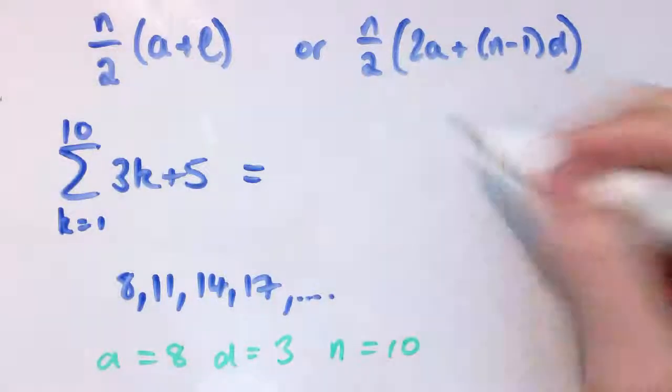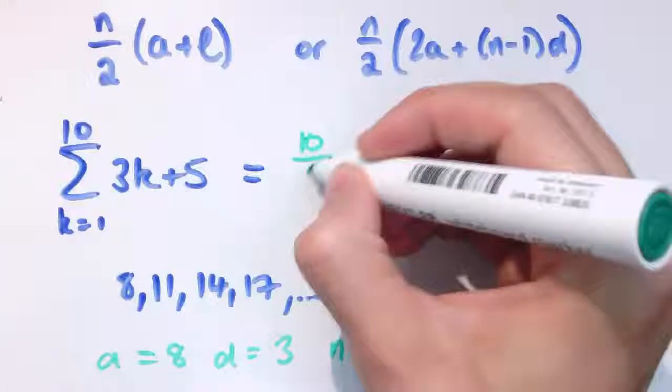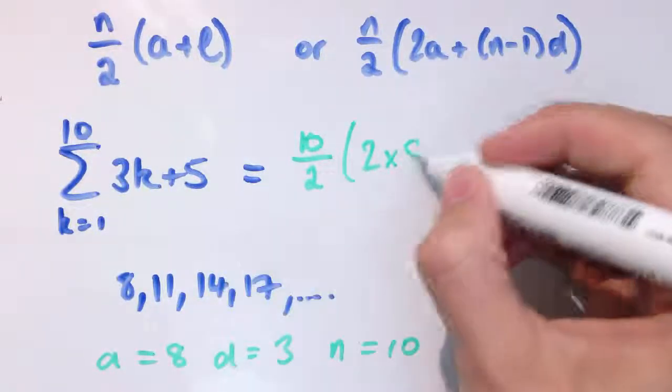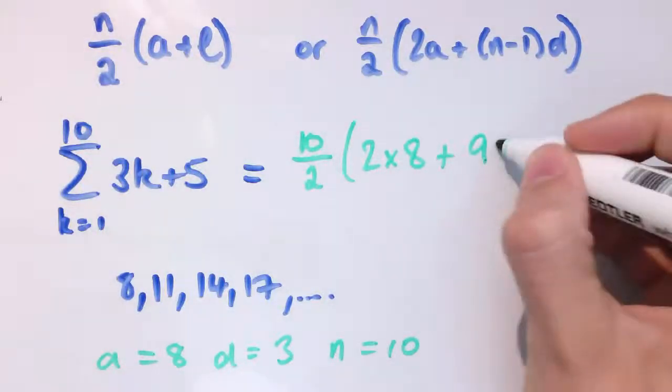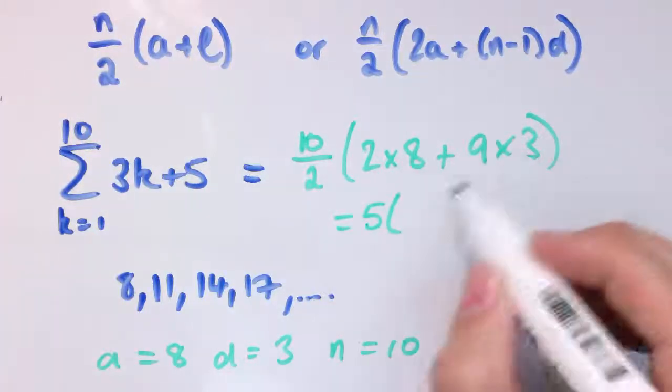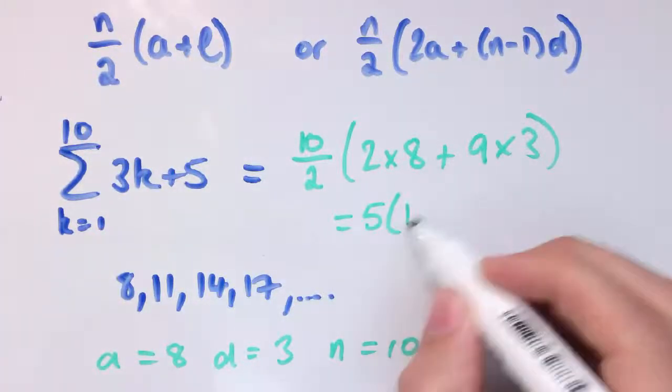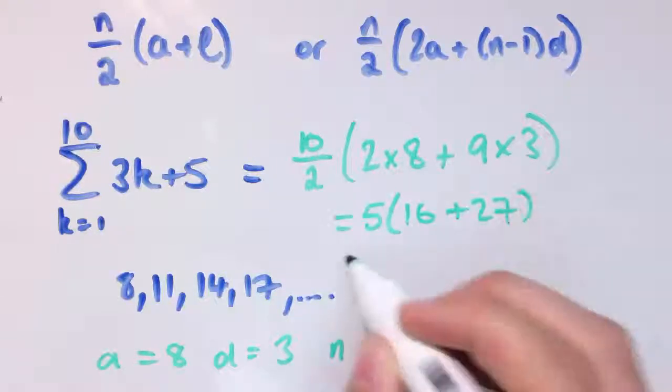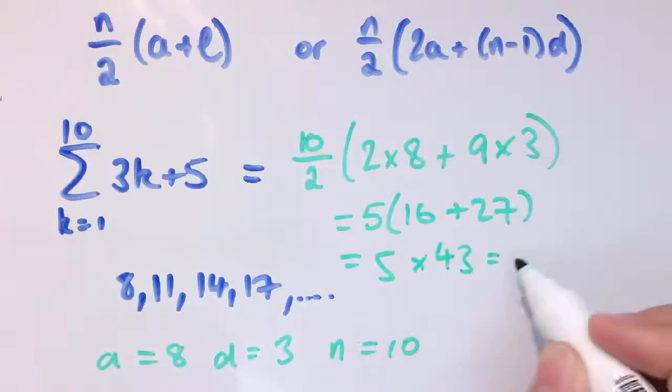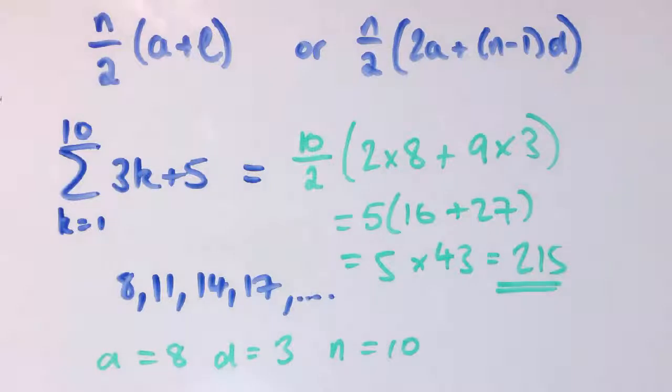So I could just plug in 3, 8, and 10 into this formula, so I'll get 10 over 2 times 2 times 8, plus n minus 1 is 9, plus 9 times 3, and that will give me the sum of the sequence. So that's 5 times 16 plus 27, which is 5 times 43, which is 215, which is a bit less work than adding it all up. And you can see that that would be particularly useful if I've got a really long sequence that I want to add together. It would be very tedious that you have to add all the terms individually.